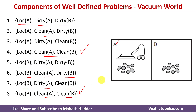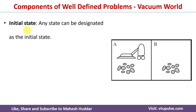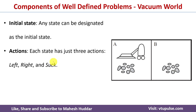The next component of a well-defined problem is the initial state. Any one of these eight states can be considered the initial state, from where we apply actions to reach state four or state eight. The initial state is any state designated as the starting point from which we begin solving the problem.